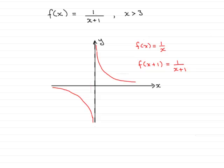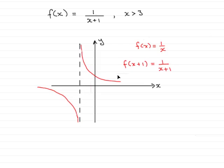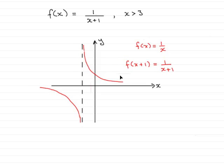So if I take that graph and just slide it to the left 1 unit — let's say about there — then what I have got is my new graph: f of x plus 1 equals 1 over x plus 1.